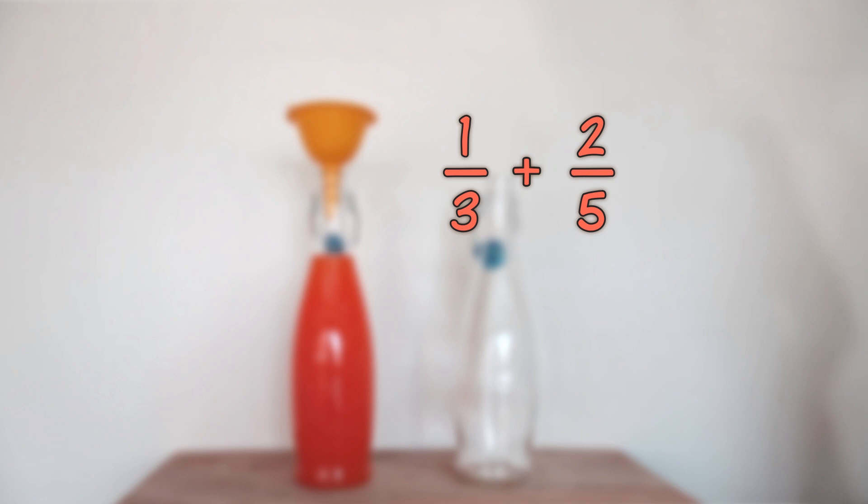First, multiply top and bottom of one-third by five, the denominator of our second fraction. Then, multiply top and bottom of two-fifths by three, the denominator of our first fraction.